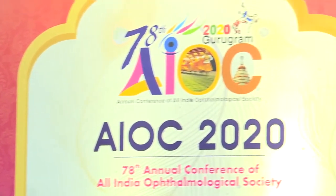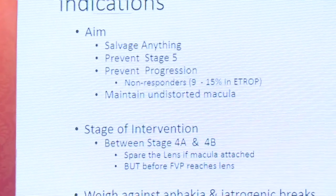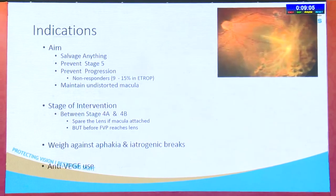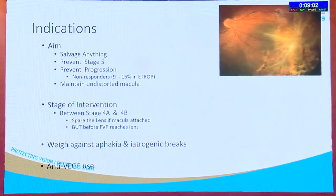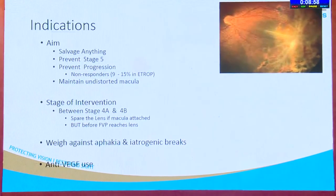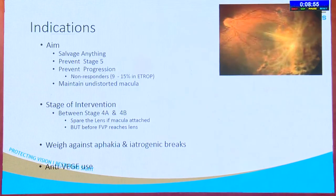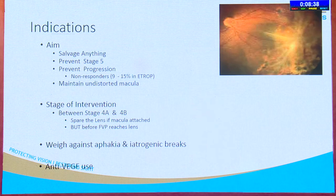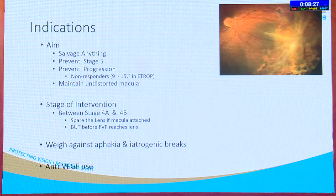I want to discuss indications of ROP surgery. The aim is to salvage vision — you want to intervene before stage 5 ROP and prevent progression. If caught early enough, you can maintain an undistorted macula. You want to intervene between stage 4A and 4B — you don't want the fovea to come off. Think of it similarly to a macular-on retinal detachment in an adult. You want to try and spare the lens, especially before fibrovascular proliferation reaches it. Nowadays we have anti-VEGF as a new tool, but that's beyond the scope of this talk.